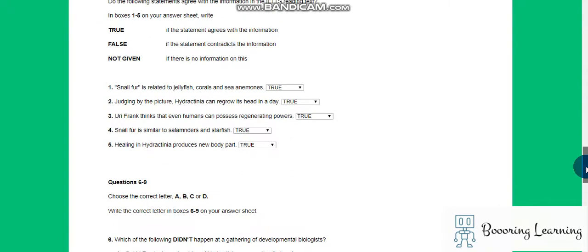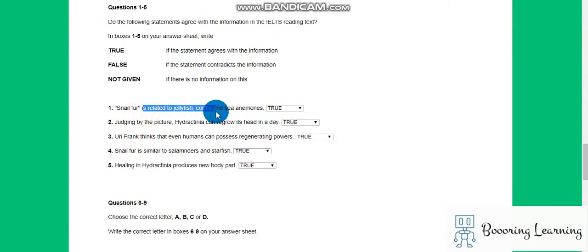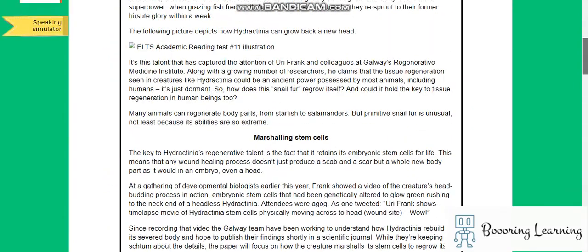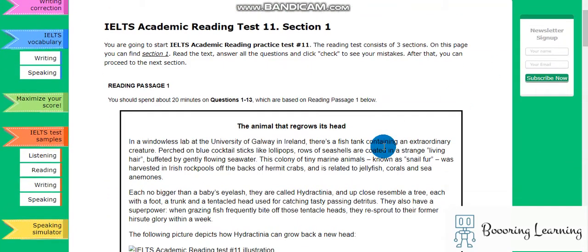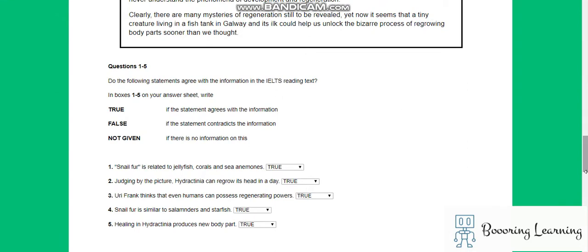Snail fur is related to jellyfish, corals, and sea... Judging by the picture, it can grow its head in a day. Okay, let's say true. We can see the picture. Frank thinks that even humans can possess regenerating powers. Okay, I think I have to read all the text. I'm looking for human.